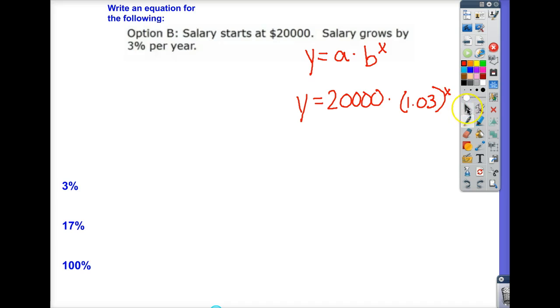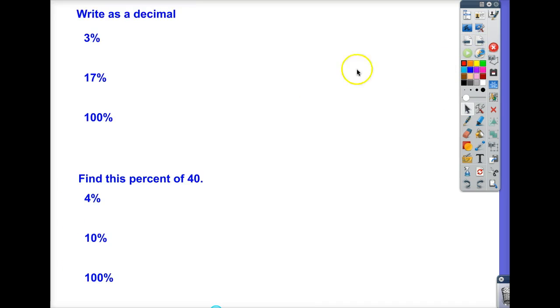So I get a good question all the time. This says 3%, so why do we have 1.03 here? That's not 3%. That's a very good question.